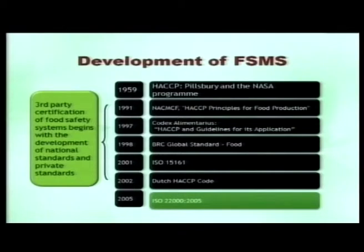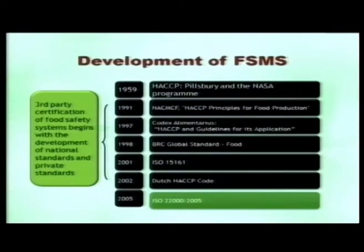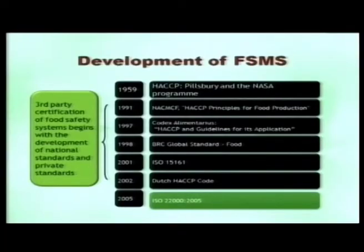In 1998, the BRC Global Standard — British Retail Consortium — came into picture, assuring that food needs to comply with HACCP requirements. In 2001, ISO published the 15161 guidance document for food and drink industries for implementation of quality management systems. In 2002, the Dutch HACCP code came into picture. In 2005, the first international food safety standard was published — ISO 22000:2005. The Indian IS standard was also adopted from Codex and developed as IS 1500.